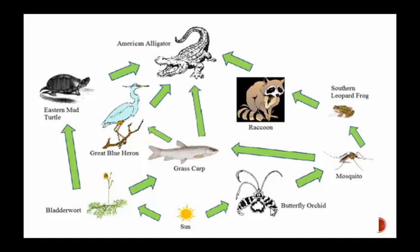The sun gives energy to the butterfly orchid through photosynthesis, which is then eaten by the mosquito. The mosquito is then eaten by the southern leopard frog. The southern leopard frog is eaten by the raccoon, and the raccoon is then eaten by the American alligator. We can see the American alligator eats four different items. If we were just looking at a food chain, it may seem like the alligator only eats one item as opposed to four.